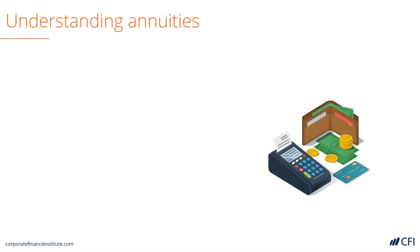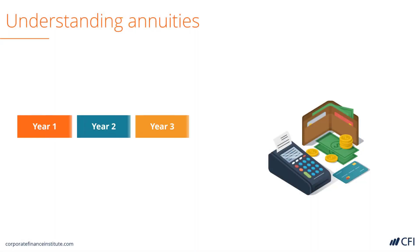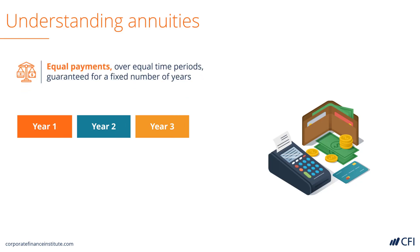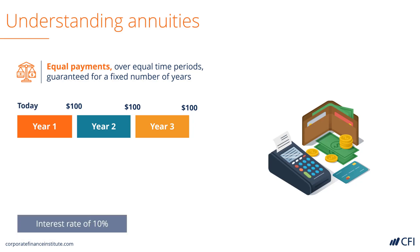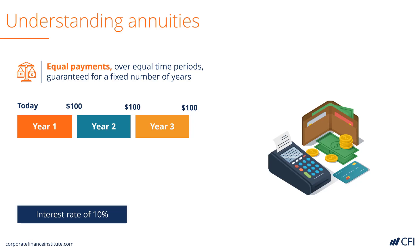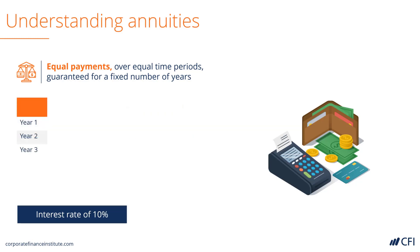Let's look at an example. Say we had a three-year annuity receiving $100 starting one year from today for each of the next three years. How much would we be willing to pay today to receive this annuity if interest rates were 10%? Using our discount factor formula where R is 10%, we can work out each of the three discount factors.